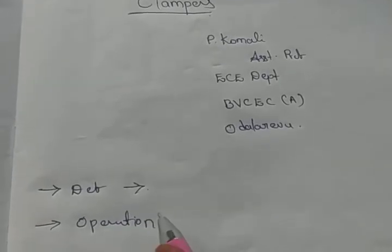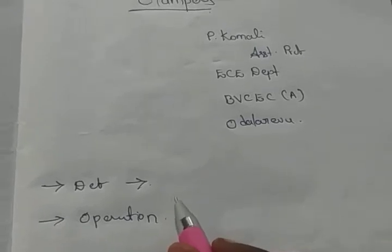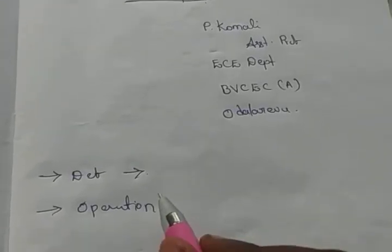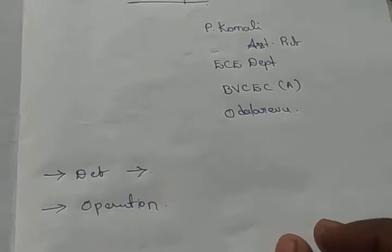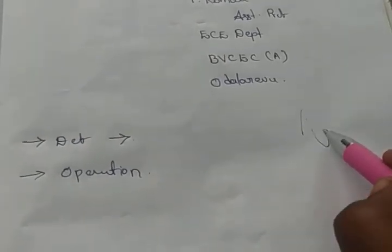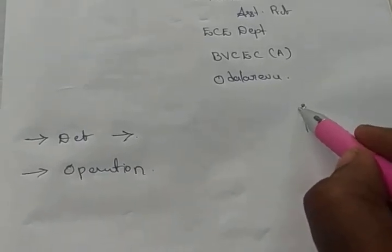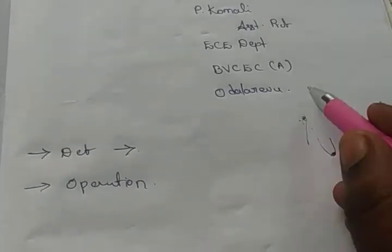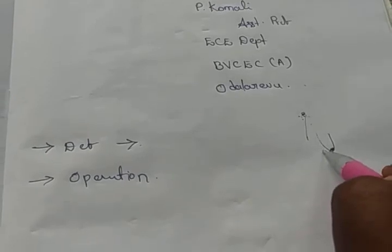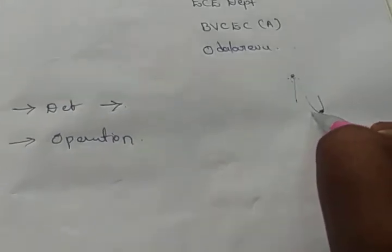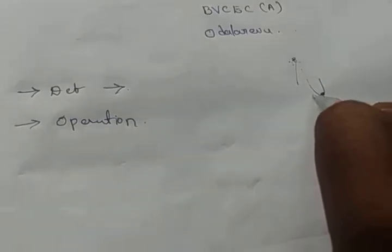According to the definition, a clamping circuit is a circuit which is used to clamp or fix one of the extremities to a constant reference level. We have two extremities: the positive extremity and the negative extremity. We can fix any one of the extremities to the required reference level, either in the upward direction or the downward direction.